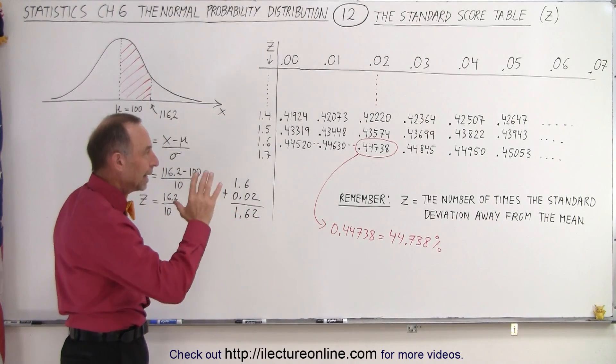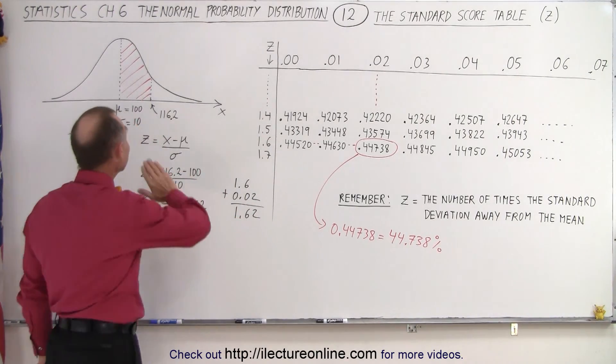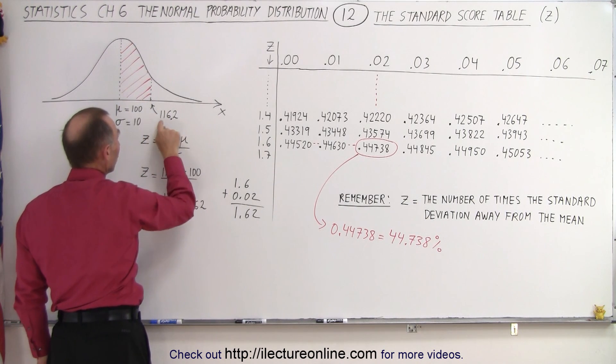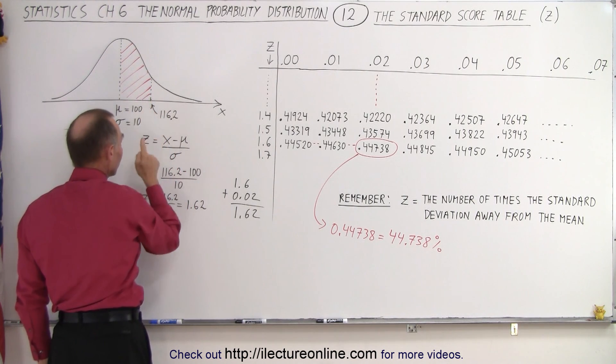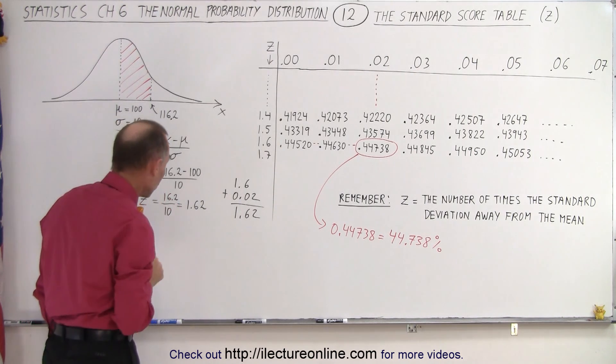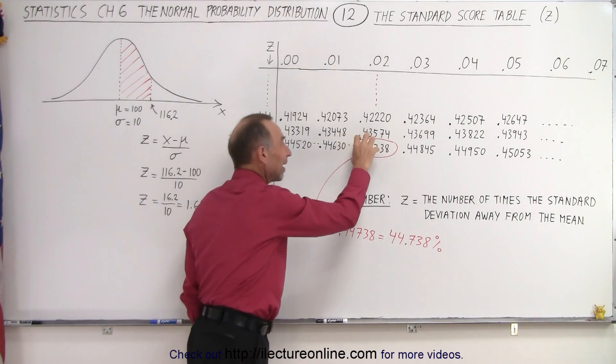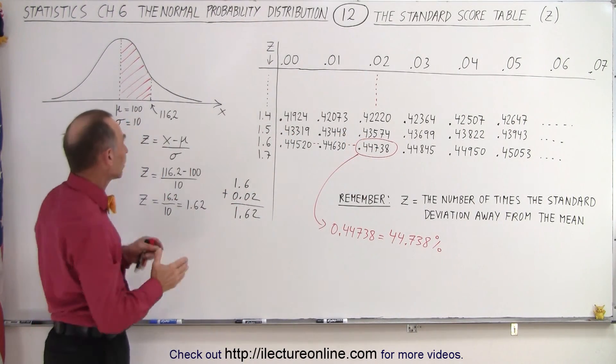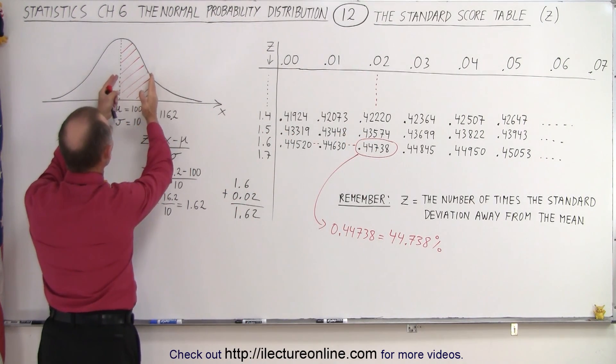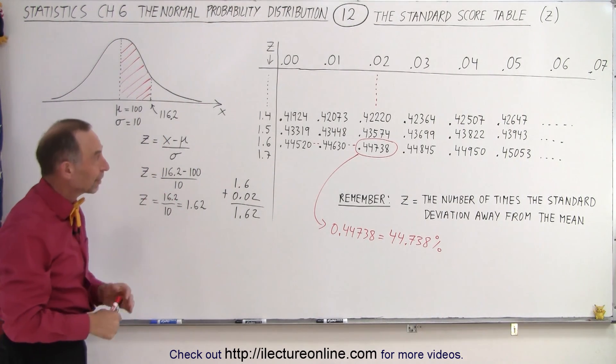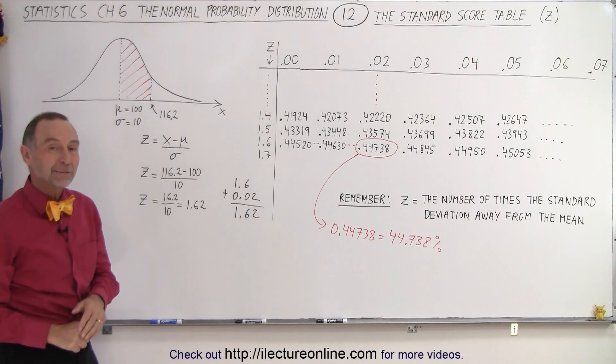It helps us find the area underneath the curve from the mean to that point where we have to calculate what that point is in terms of the Z number or the Z score. And once we have the Z score, we can go to the table and find the percentage of the area represented by this region relative to the entire curve, which of course is 100% for the entire curve. And that is how we use the table.